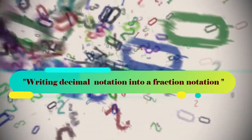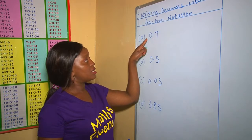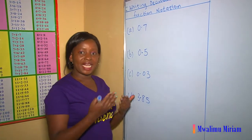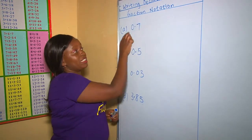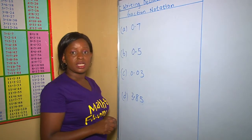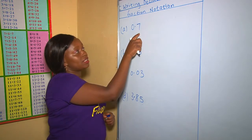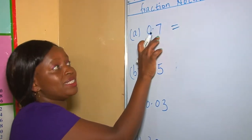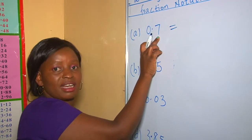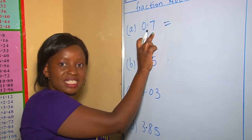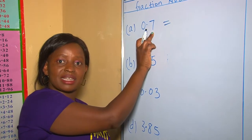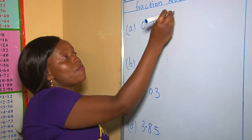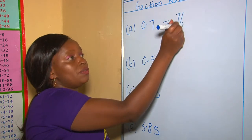To begin with, we have our first question here: 0.7. What is going to guide us when converting decimals into fractions is the digit after the decimal point. After the decimal point here, it's only one digit, meaning that its denominator must have one zero. Which number has one zero in the denominator? That is ten. Therefore, 0.7 is going to be seven out of ten.